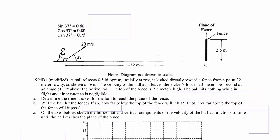Part A: determine the time it takes for the ball to reach the plane of the fence. In the x direction, the velocity of the ball from the moment it leaves the kicker's foot is going to stay constant. So all we need to know is the distance that the fence is away from the kicker, and the velocity in the x direction the moment the ball leaves the kicker's foot. We can use the kinematics equation: distance equals velocity in the x direction times time.